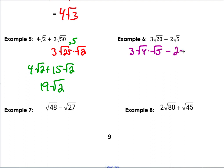Here, 20 is really the square root of 4 times the square root of 5, but the square root of 4 is really just the same thing as 2. So 3 times 2 is 6 square roots of 5 minus 2 square roots of 5 is 4 square roots of 5.